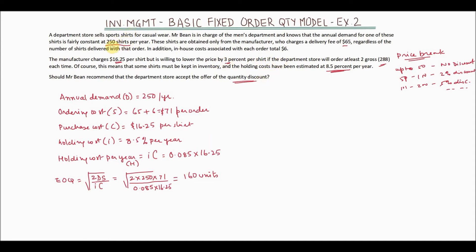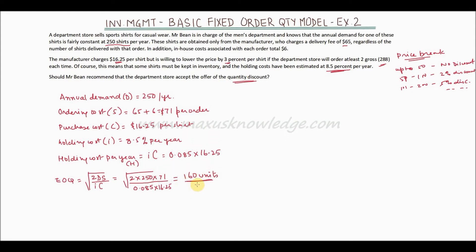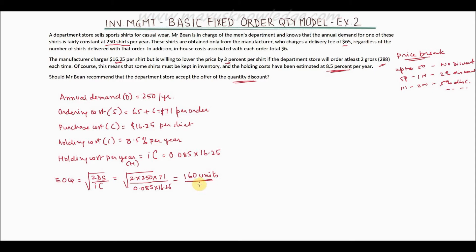So if we do not consider the 3% discount, with annual demand of 250 shirts, the given ordering cost, holding cost, and purchasing cost, the economic order quantity — the quantity that should be ordered at one point in time — is 160 units. Now we need to find out whether the total cost is lower when placing a single order of 160 units or a single order of 288 units.